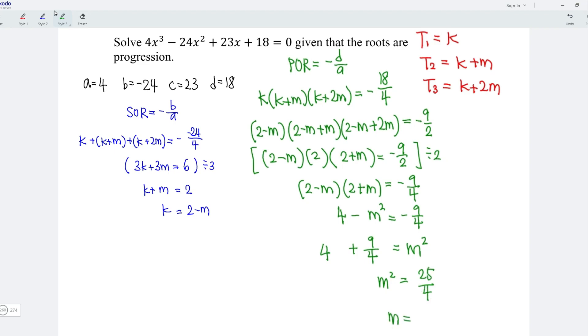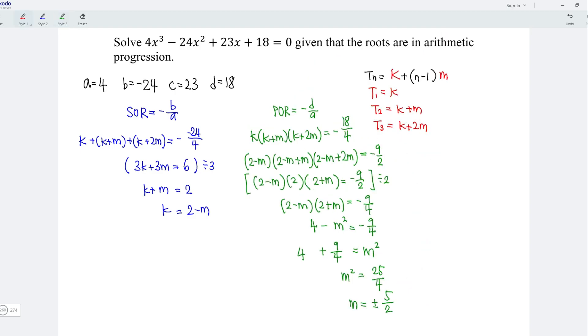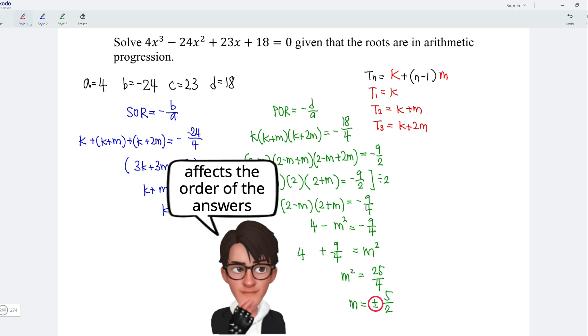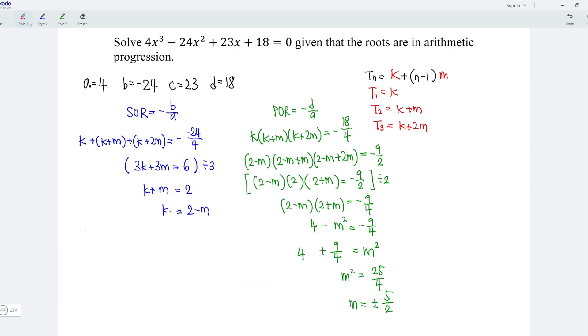Square both sides, we obtain plus minus 5 over 2. We don't have to really bother about the plus minus sign. Since this would just affect the order of the roots, either in ascending order or descending order. So we just have to solve for K by using one of the values. I'm going to take positive value, that is M is equal to 5 over 2.